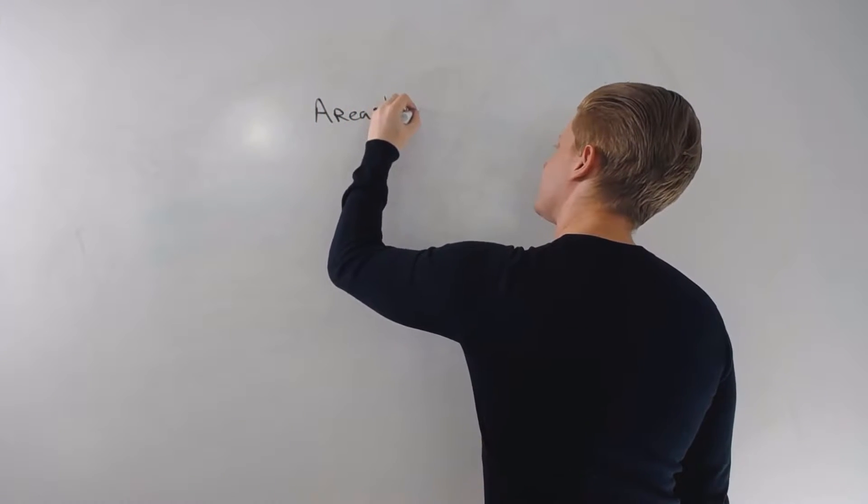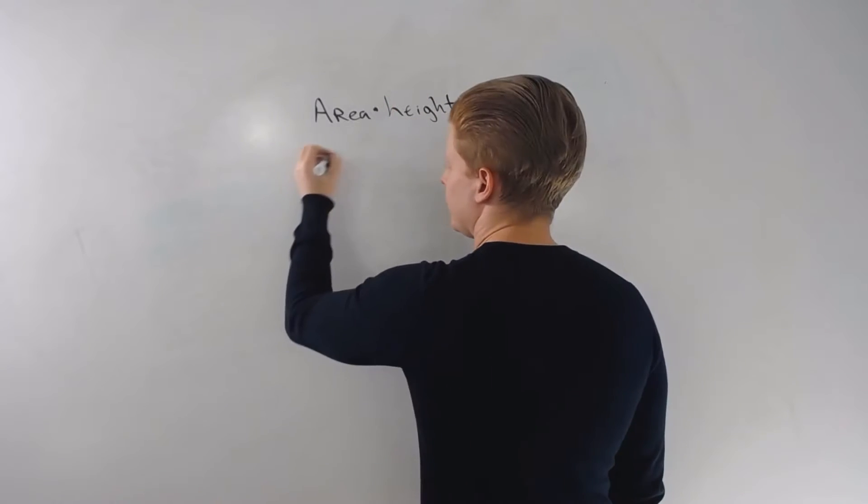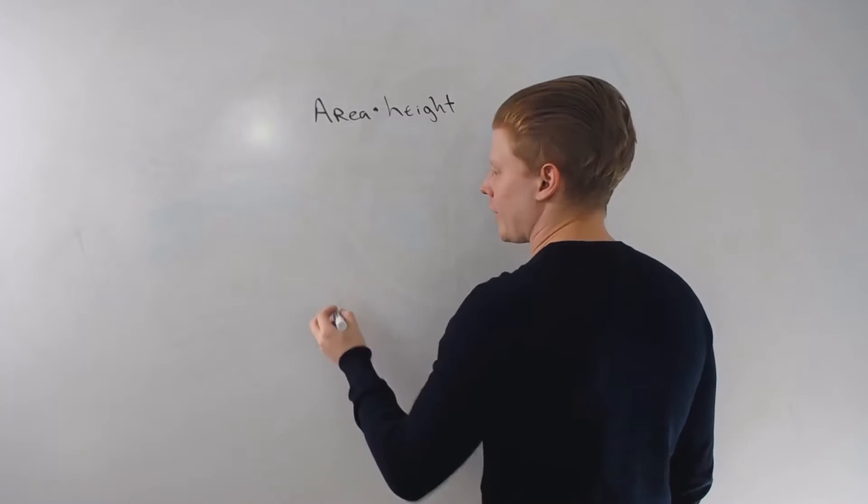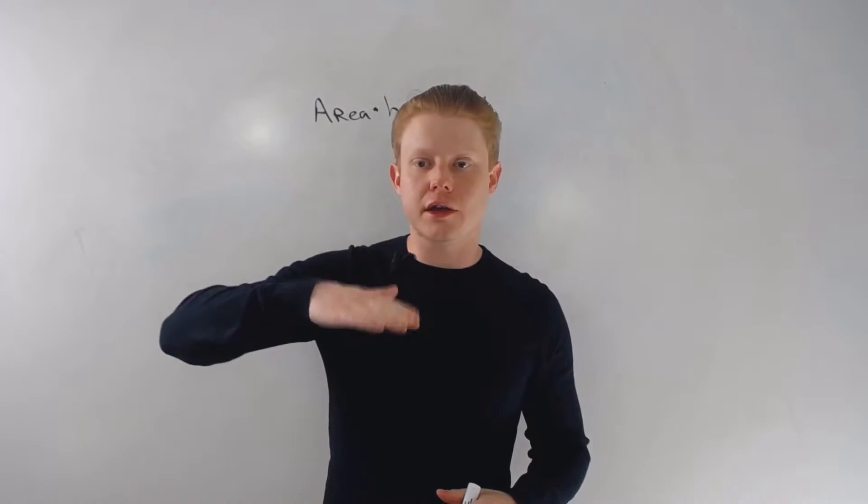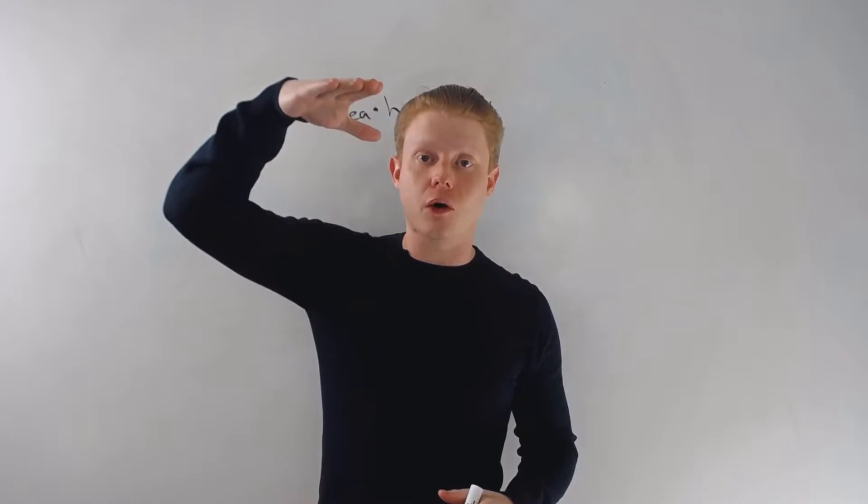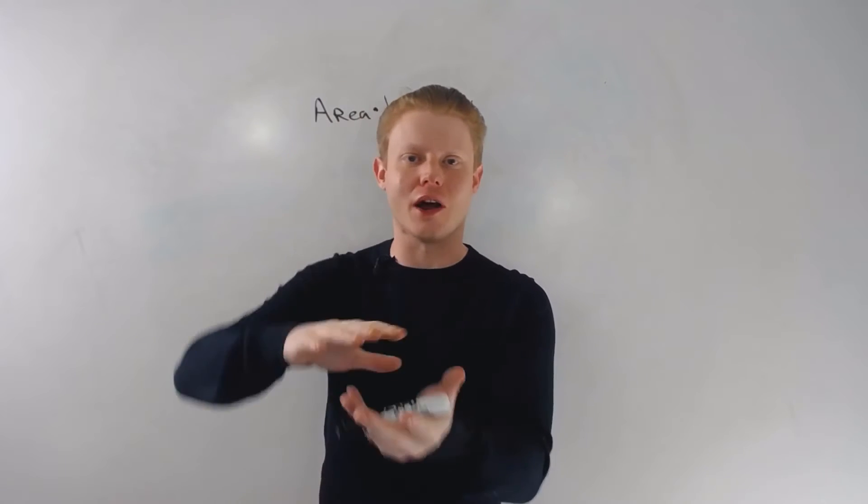Here's the deal with both rectangular prisms and right cylinders: it's just going to be area of the base times the height. So if you think of a deck of cards, right, a deck of cards is just card after card after card, and after a while they amass volume.